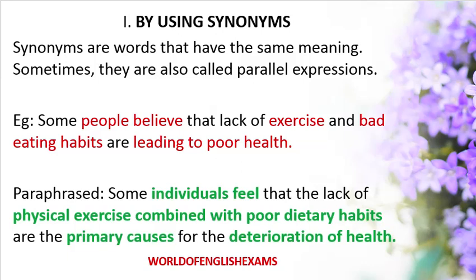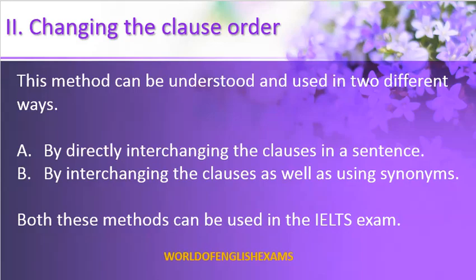Now the second technique of how to paraphrase is called changing the clause order. A sentence may be divided into more than one clause. We identify the clauses and then directly interchange or flip them. This can be done in two ways: first, by directly interchanging the clauses; or second, by interchanging the clauses as well as using synonyms — which is called a hybrid method of paraphrasing.